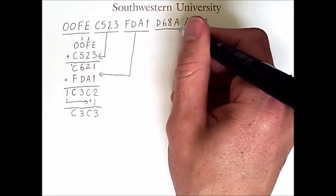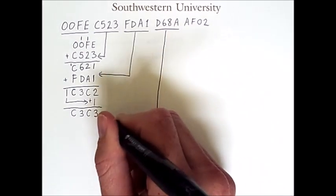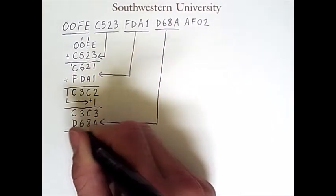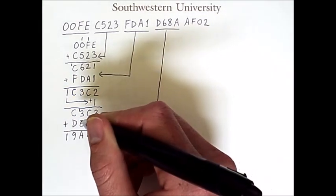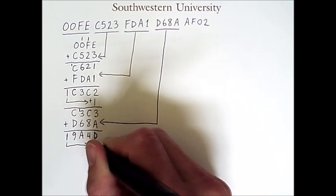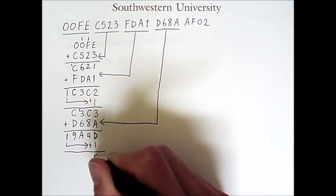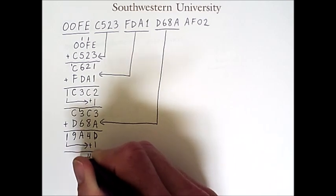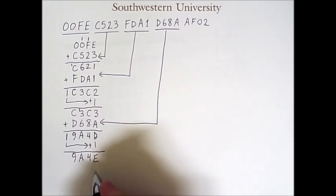Now we'll add the next 16-bit word to our current partial sum. So I'll write that value out. When we add the next word, we get another one carrying out, which of course goes back to the first position and is added to get a final result of 9A4E.